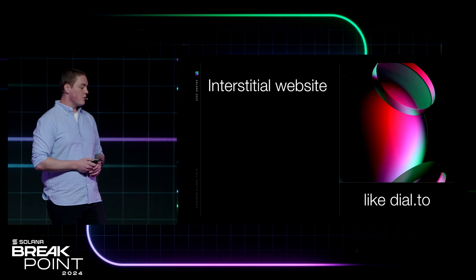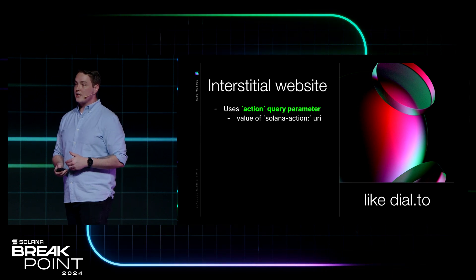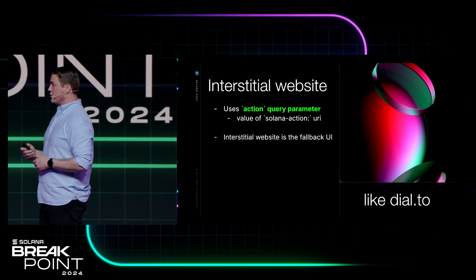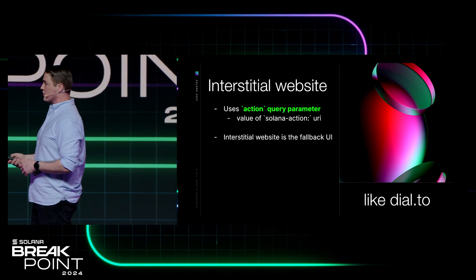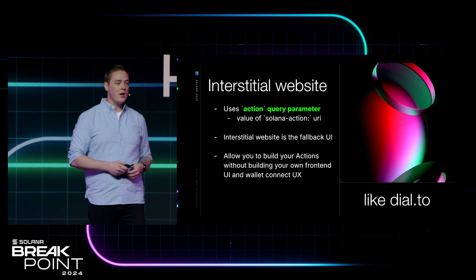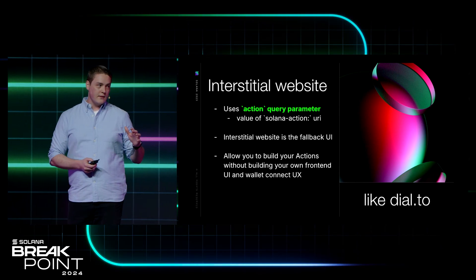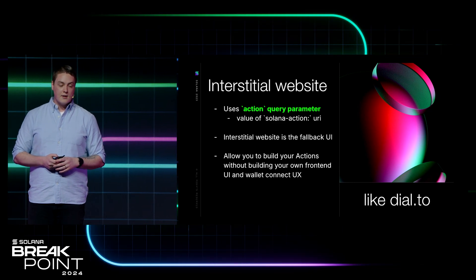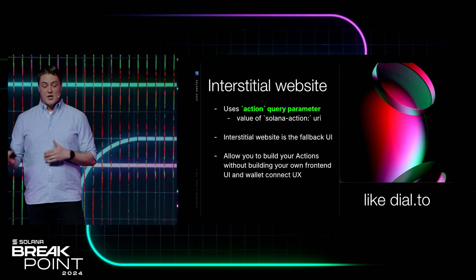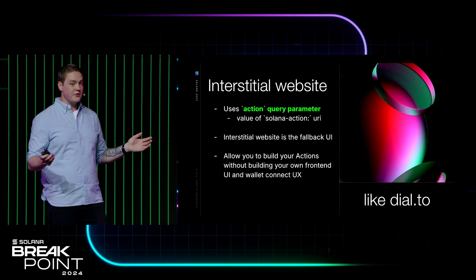The last one is the interstitial website. The interstitial website — like dial.to, shout out to Dialect — all it's doing is taking the action query parameter, where the value is actually just the Solana Action URI scheme directly in the URL. When you share these URLs, you can click on them and interact. The interstitial website becomes the fallback — users know how to interact with URLs. But if users have Blinks enabled, it unfurls and you get this experience: connect wallet, click buttons, take user input. One of my favorite things is that as a developer, you don't actually have to write any front-end code. You don't have to ship it or worry about wallet connect. The interstitial website handles that — so you can literally write a REST API that returns a transaction, and you've built a full dApp.